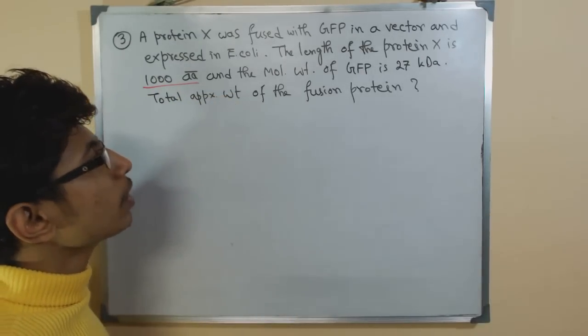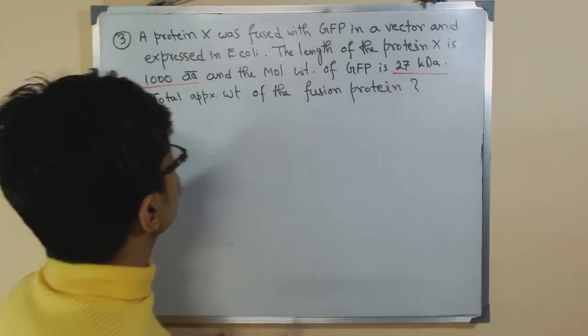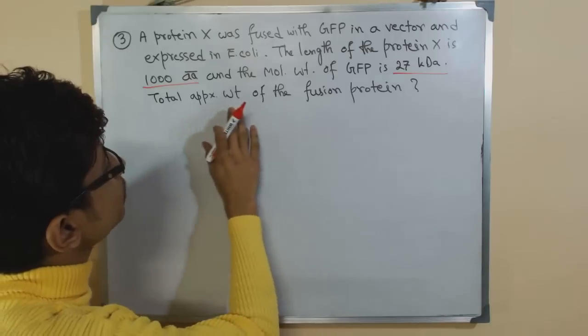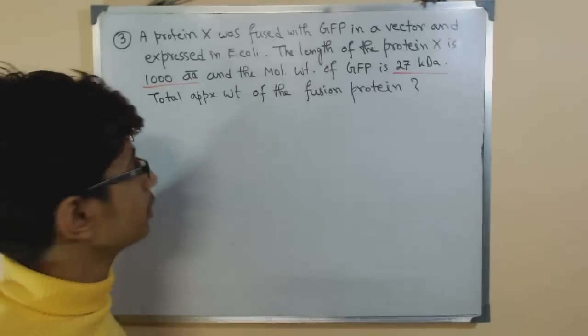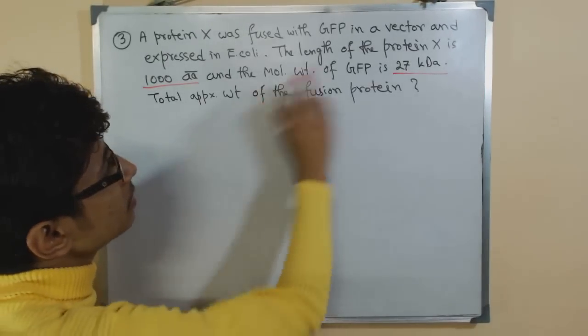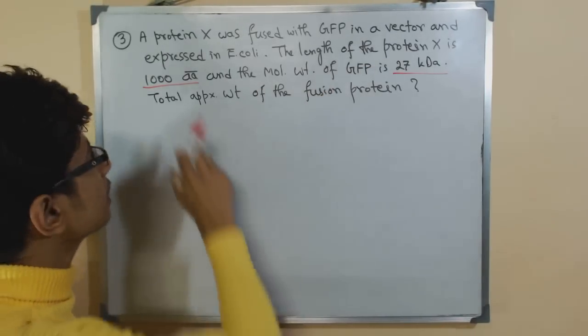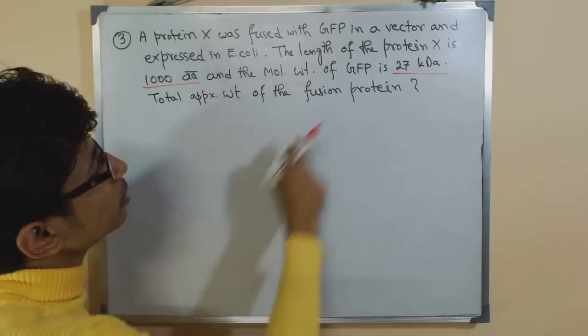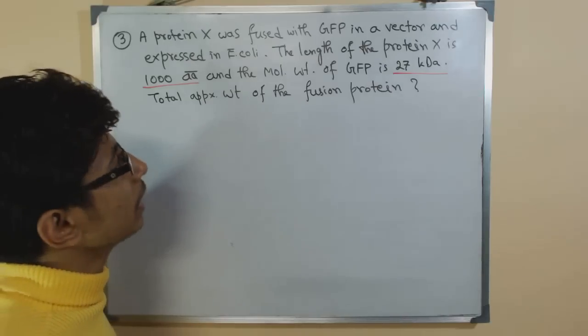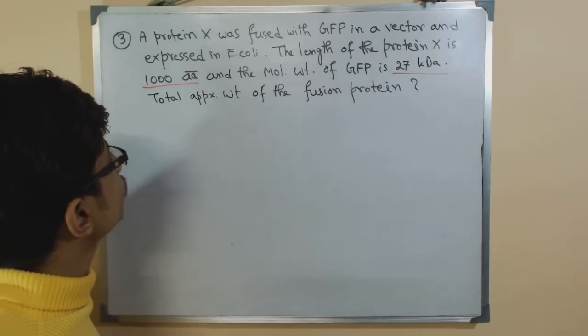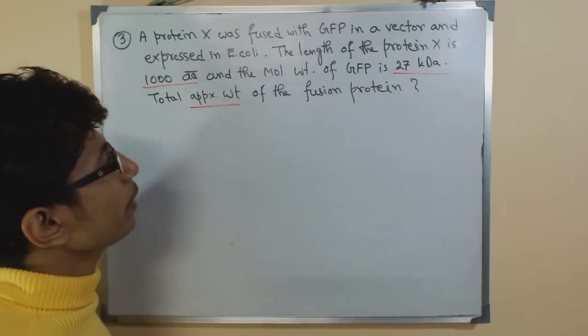The molecular weight of GFP is 27 kilo Dalton. So total approximate weight of the fusion protein, that's the question. What it is telling us is the length of the protein X, the number of amino acids, and they also provide us the molecular weight of the GFP. So what we need to find is the approximate molecular weight of the fusion protein.